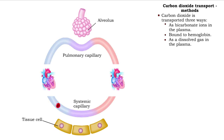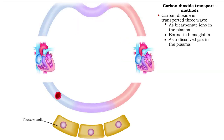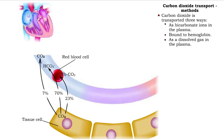Carbon dioxide is picked up at the tissues and carried in the blood to the lungs for disposal in three forms: as bicarbonate ions, as carbon dioxide bound to hemoglobin, and as a dissolved gas.